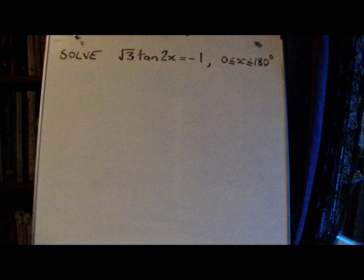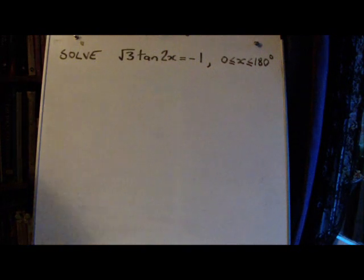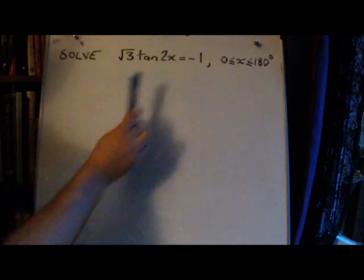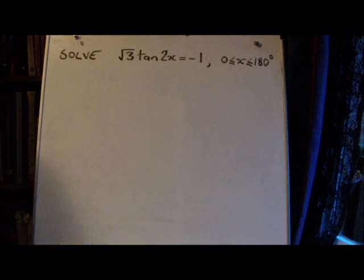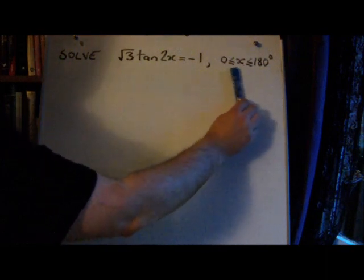This is an example of a trig equation with a compound angle, meaning we don't just have x, we now have 2x. So we're going to solve the equation √3 tan 2x equals negative 1, and we're going to find all solutions in that interval.